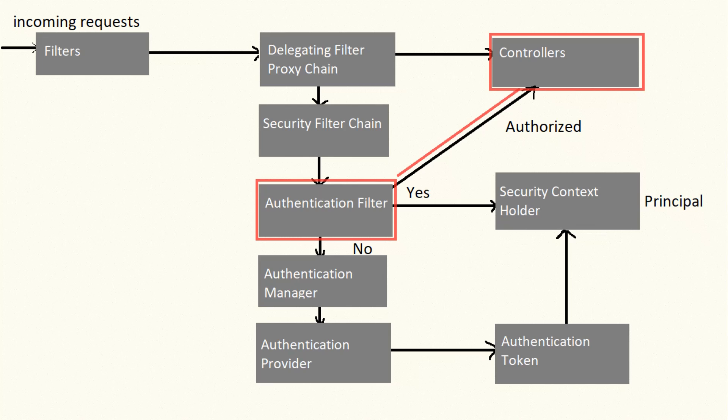For subsequent requests from the same user who is already authenticated, the authentication filter just checks whether the user is authorized to access that particular resource and forwards the request to the controllers, which then serves the request. There are many implementations of authentication filter, such as basic authentication filter, username-password authentication filter, and OAuth2 authentication filters.